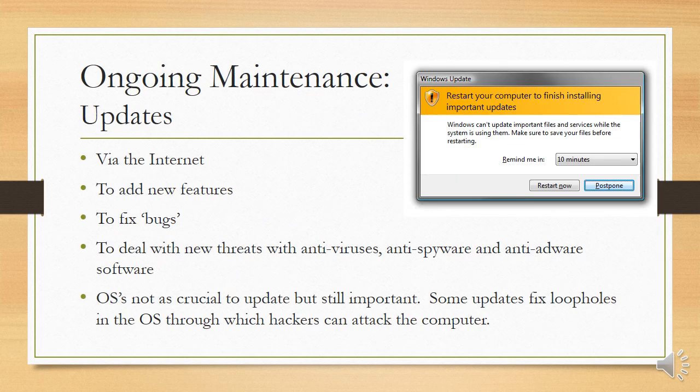Regarding updates on Windows: you'll notice that regularly you need to update Windows. Sometimes Windows gets very slow or certain features aren't working, because Windows wants you to restart your computer if you just hibernate it every day rather than switch it off completely. Why are updates important? They add new features that Windows or whichever software wants to add. They also fix little bugs that may have been found, and they deal with new threats — like with antiviruses, anti-spyware, and anti-adware software.